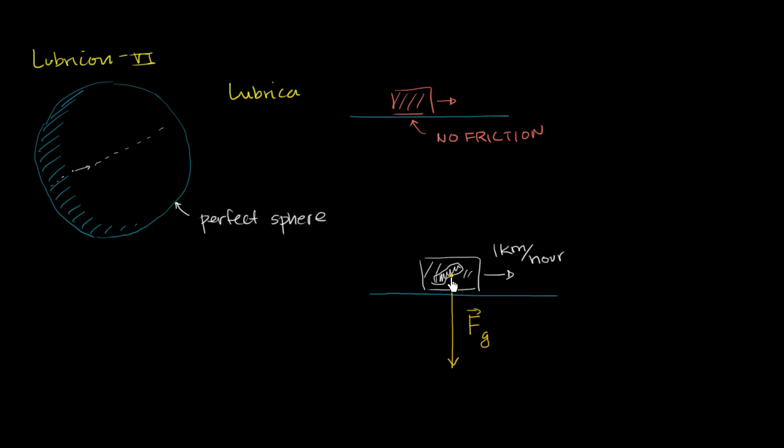But then we know that the block is not just spiraling towards the center of the Earth. We have the surface here. It's not going to go through this surface of Lubrica. We can also assume that Lubrica is a very strong material. And so you also have a normal force that is keeping the block from spiraling towards the center of the Earth. So this is a normal force.